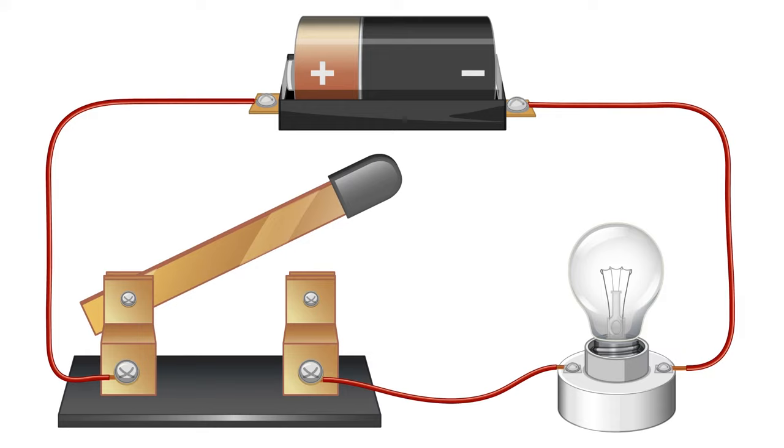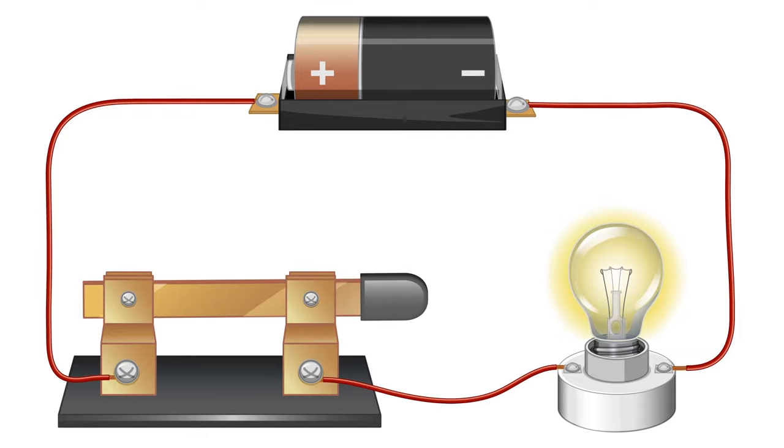There is no complete path along which electricity can flow and the output device, the bulb, does not light up. When the switch is in the on position, there is a complete path along which electricity can flow and the bulb lights up.